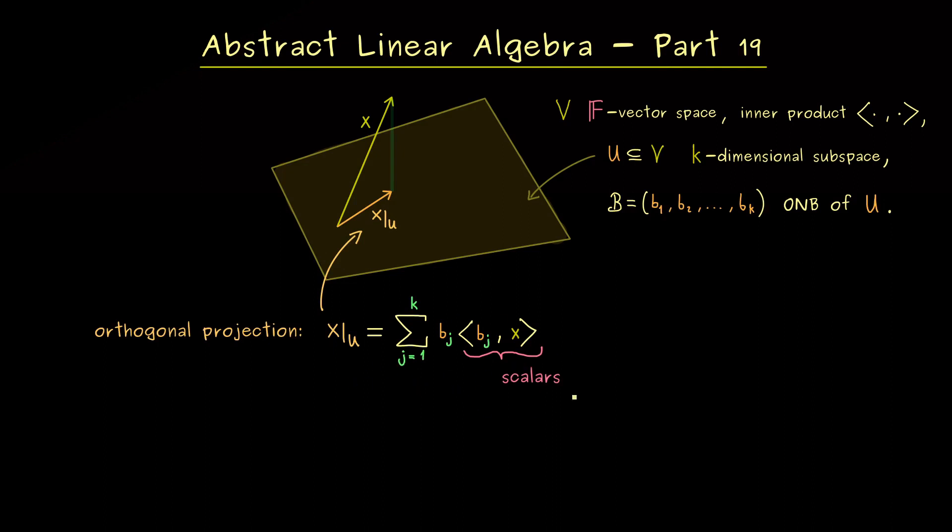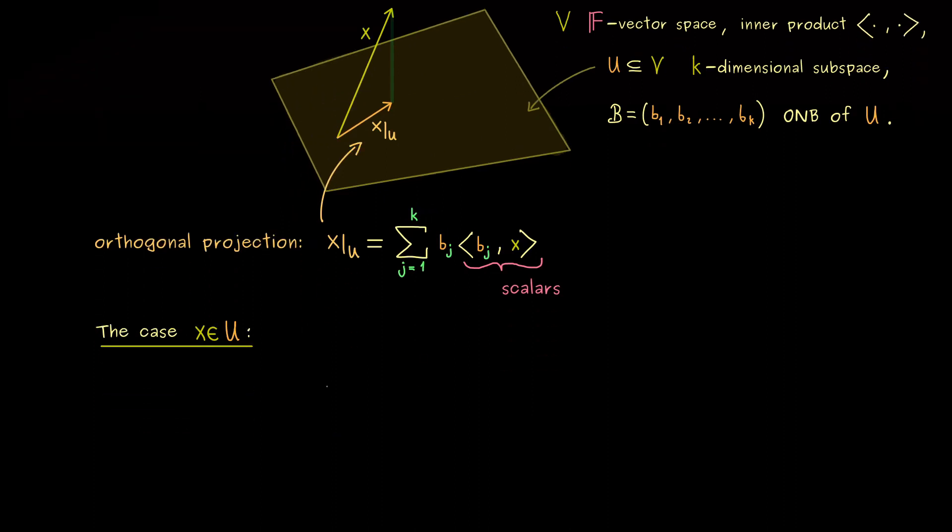Hence this formula helps finding the correct linear combination even in the case that x already lies in the subspace U. Obviously in this case the orthogonal projection of x is equal to x. But of course the formula still holds. So maybe let's sketch this case.